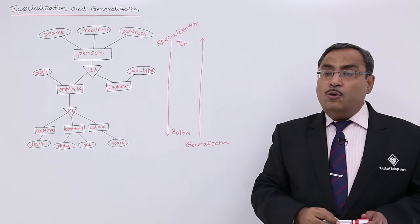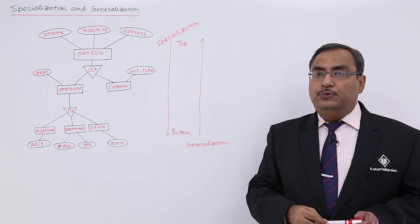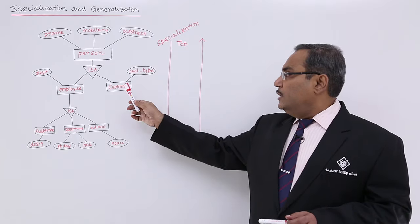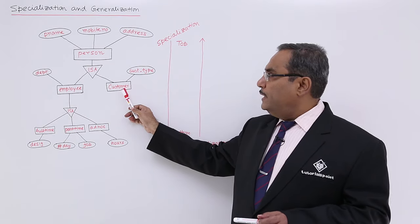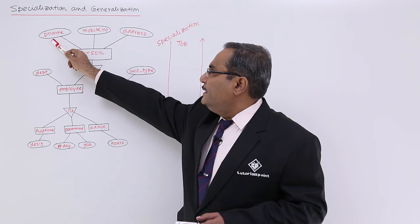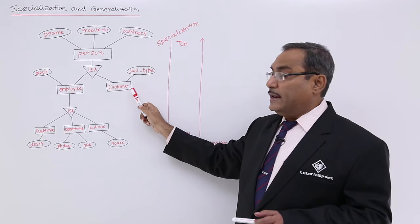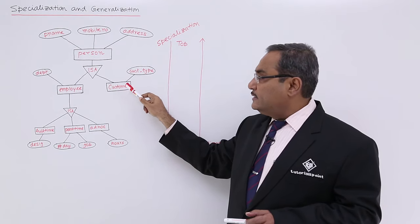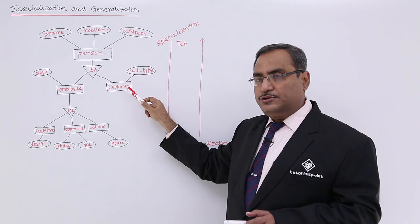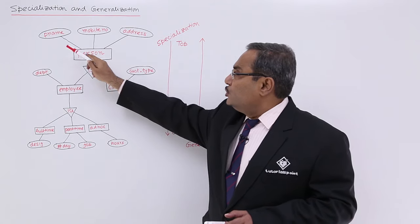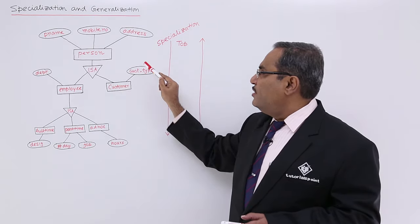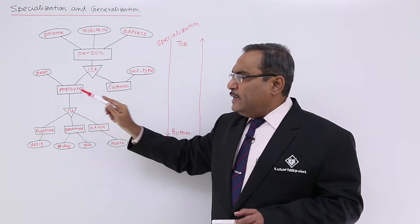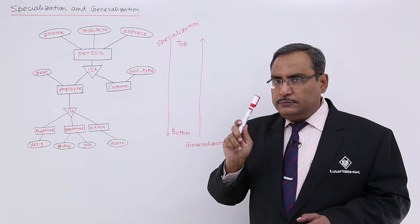How to get the attributes of those entities for which I am going to form the tables or schemas? For customer, the attributes will be person name, mobile number, address, and customer type. These particular attributes are getting inherited, and this customer is getting those attributes through attribute inheritance.